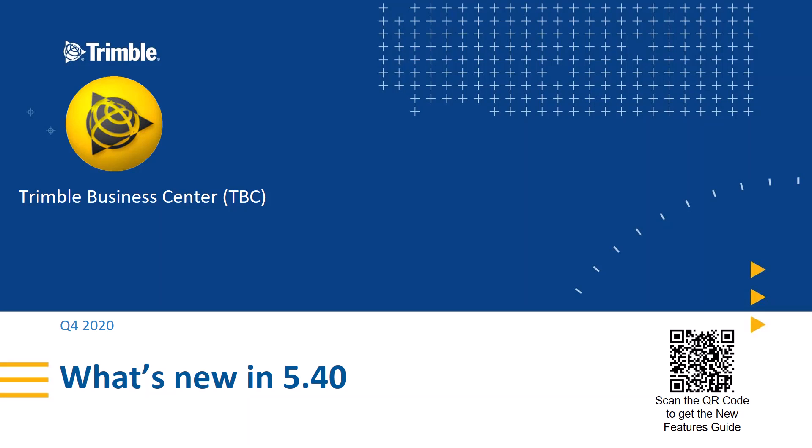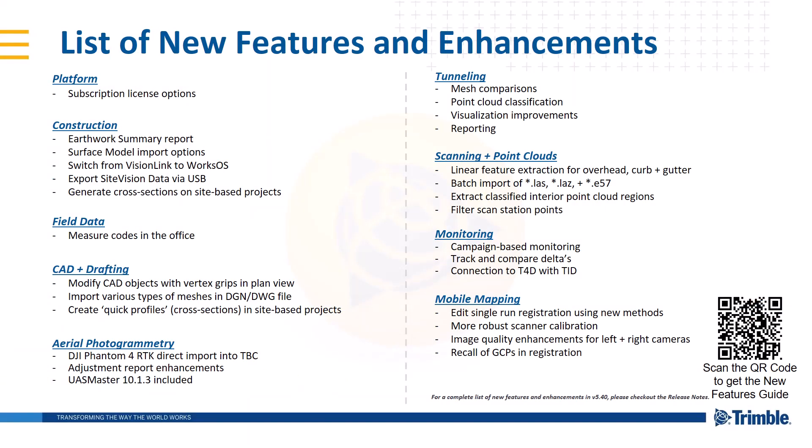Here at Trimble, we're excited to announce the latest release of Trimble Business Center version 5.40. With this release, we have some great new features and enhancements specific to aerial photogrammetry and the direct import of DJI Phantom 4 RTK data, as well as new scanning and point cloud tools for the extraction of linear features such as overhead power lines and curb and gutter. Also a new monitoring module, a new way to purchase Trimble Business Center through a yearly subscription, and new tools for improving your construction workflows.